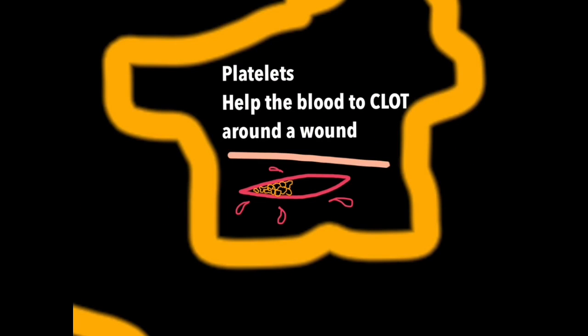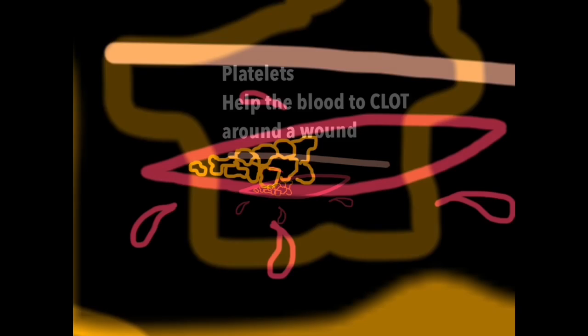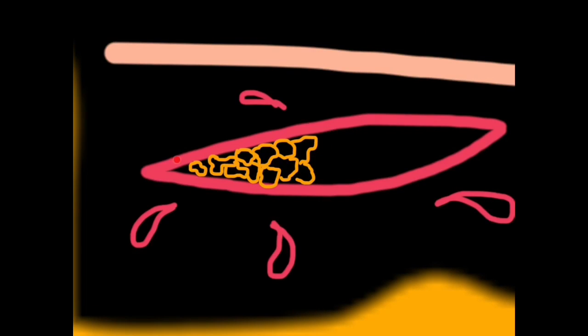So now let's look at platelets. Platelets are basically mashed up cell fragments which help the blood to clot around the wound. You see they have an irregular shape. And this irregular shape makes it very easy for them to cling to each other, forming a seal. This enables a scab to form to allow the wound to heal, but also stops further invasion by microorganisms. People who have a low platelet count may bleed excessively when cut.